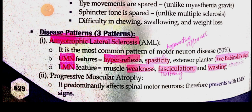There are three patterns of motor neuron disease: amyotrophic lateral sclerosis, progressive muscular atrophy, and progressive bulbar palsy. In ALS (most common), both UMN signs (increased reflexes, spastic paralysis, positive Babinski's, increased tone) and LMN signs (muscle fasciculations, atrophy, wasting, negative Babinski's, decreased reflexes, decreased tone, flaccid paralysis) appear. In progressive muscular atrophy, lower motor neuron signs predominate as it affects spinal motor neurons.